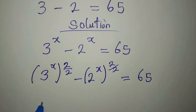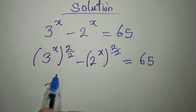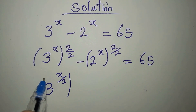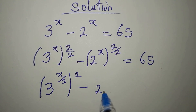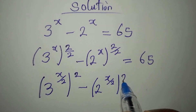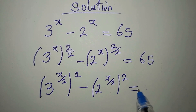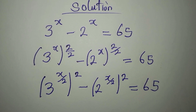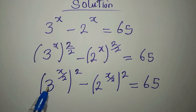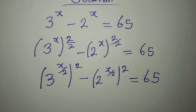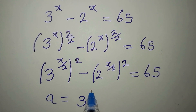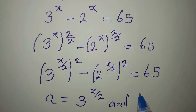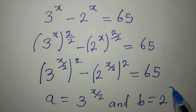Now I bring the 2 in, so I have 3 to the power of x over 2, to the power of 2, minus 2 to the power of x over 2, to the power of 2, equals 65. We can now see the difference of two squares. Let us replace these terms with letters: a is 3 to the power of x over 2, and b is 2 to the power of x over 2.